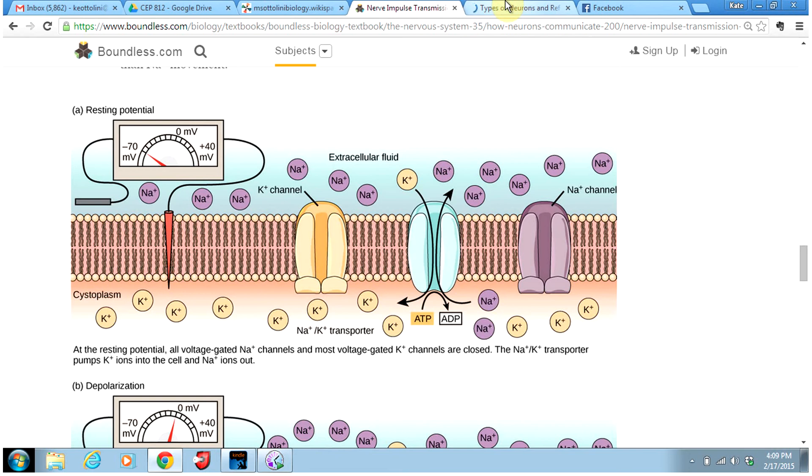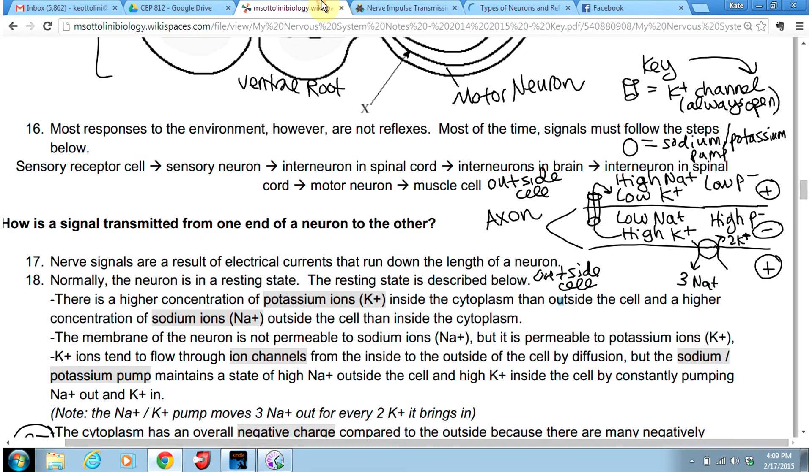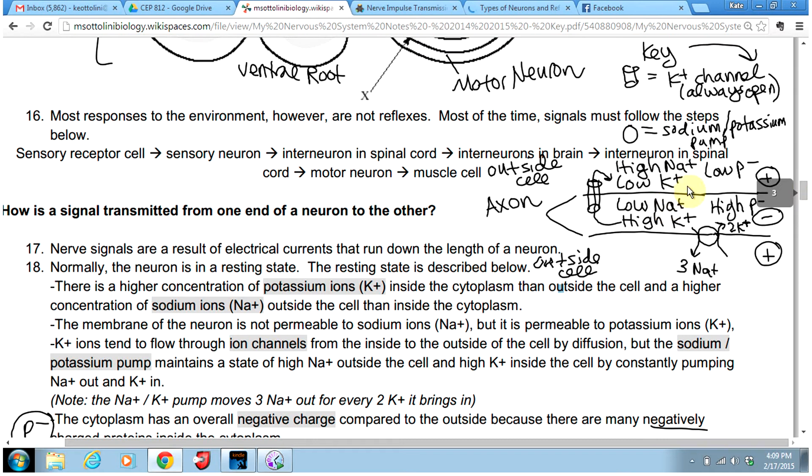Now on your paper, this is going to be right after the section on the reflex loops. We're going to draw a nerve cell at rest. So I want you to draw the axon of your nerve cell as two horizontal lines. And above that axon is going to be the outside of the cell. Same with below that axon.